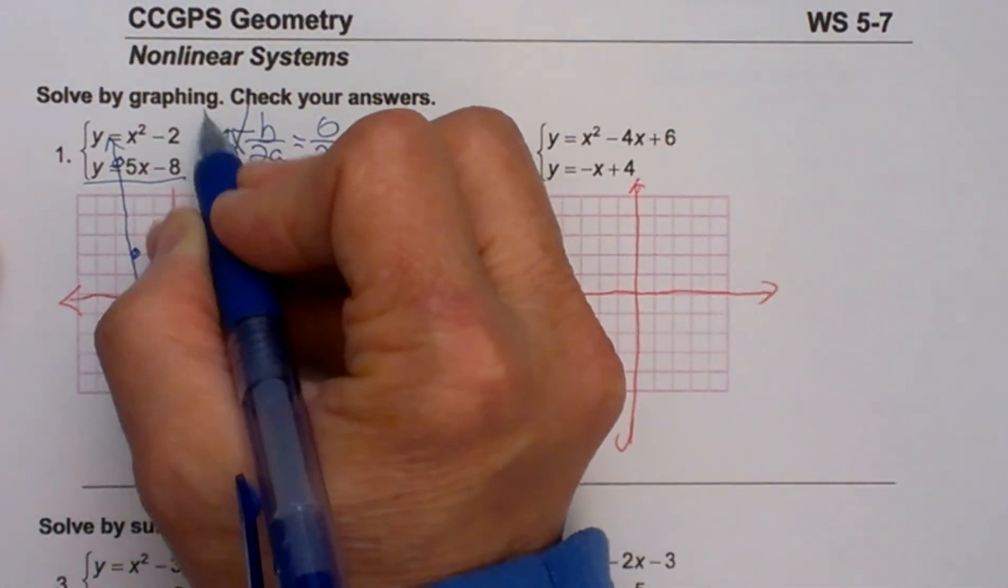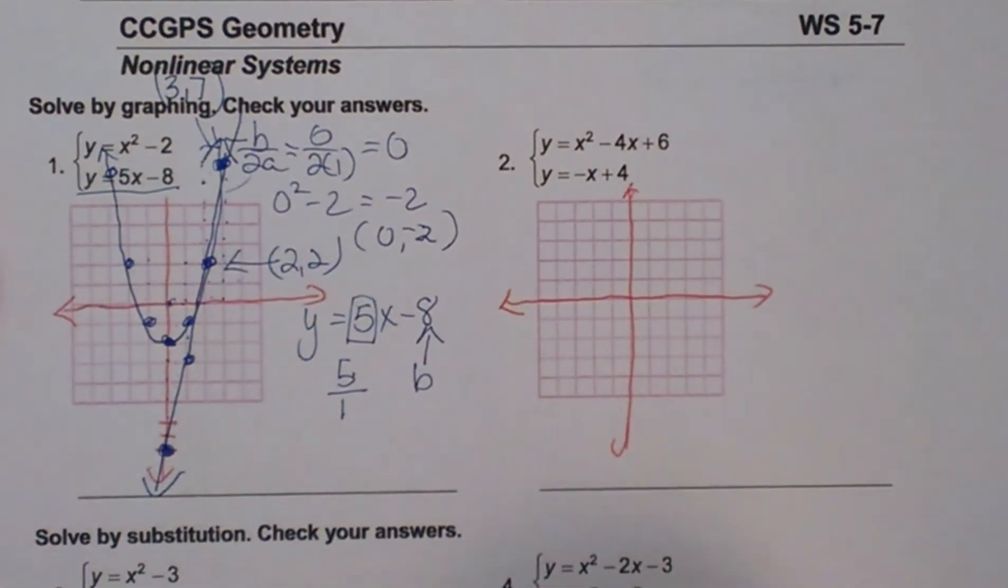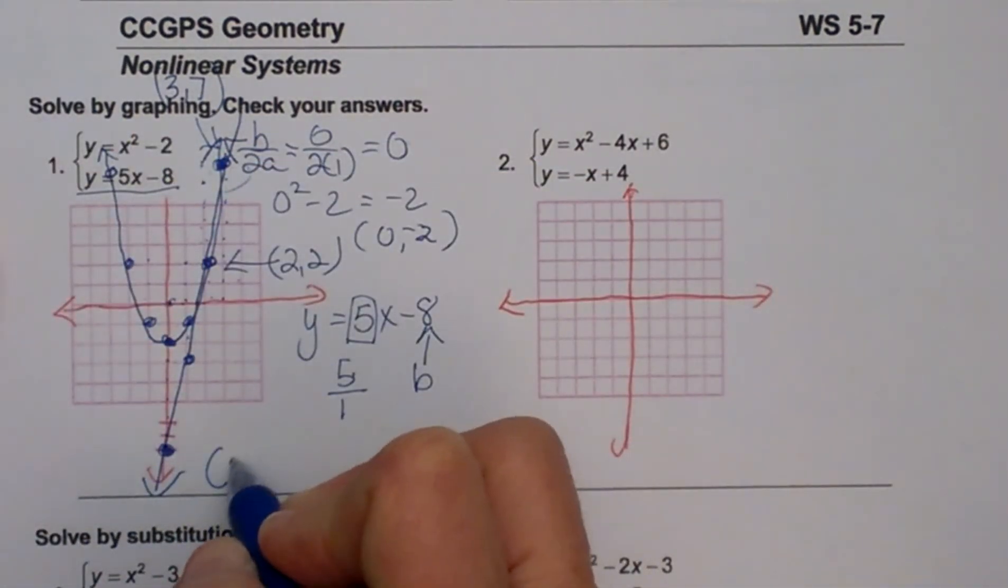So the point up here is 3, 7. It is kind of hard to fit it all in on that graph, but you can see it. So what is my solution? Well the solution is those two points.